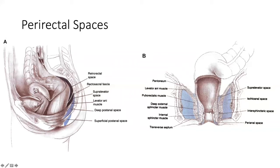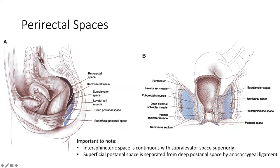There's an intersphincteric space between the internal and external anal sphincters — that is probably going to be the most commonly involved space. That's right where those anal glands and crypts sit, making it a very common source as the nidus of these abscesses. You have your ischiorectal space here. There's a superficial post-anal space and a deep post-anal space. The ischiorectal space communicates with the contralateral ischiorectal space posteriorly by way of these spaces — that's how one could form a horseshoe abscess. And then there is the supralevator space.